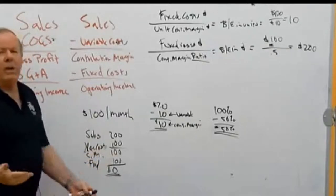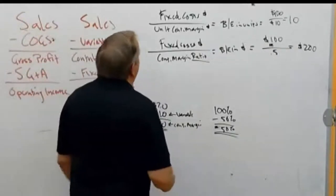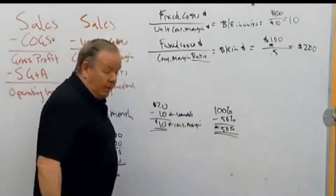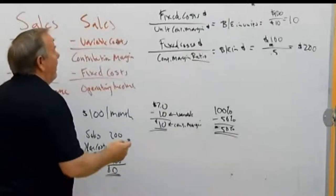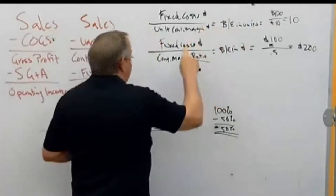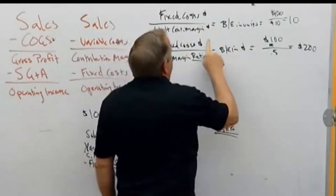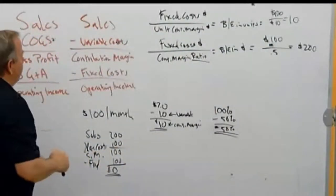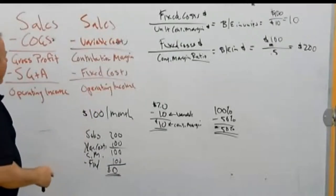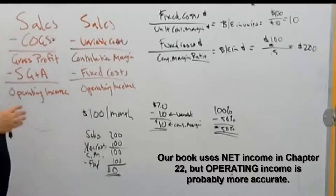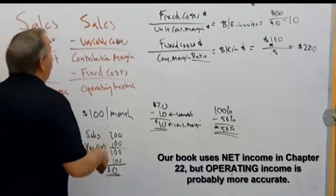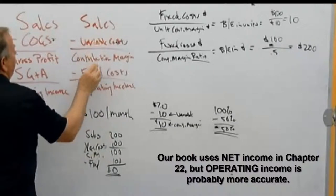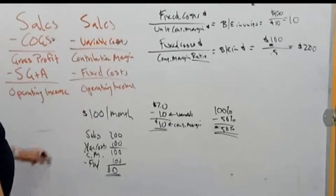We didn't go into business just to break even — we want to make money. To hit a target operating income, simply add that target to the numerator before doing the calculation. That tells you how many units to sell or what sales dollars to achieve. Note that the book sometimes says net income, but I'll consistently say operating income since interest expense and gains on equipment sales don't fit neatly into variable or fixed cost categories.